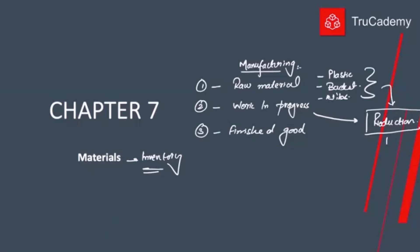At the end of the production process we get completed units, which we call finished goods. Finished goods are units that are ready to sell to customers. So in manufacturing organizations we have three types of inventory: raw material — the first inventory we buy — then work in progress when it enters the production department, and finally finished goods once production is complete, which is the inventory we are going to sell to our customers.